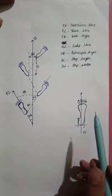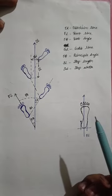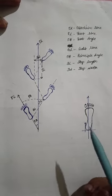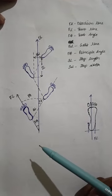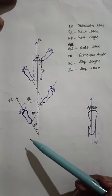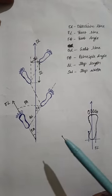So here I'm going to explain the diagrammatic representation of gait pattern analysis. Here are some parameters to explain the gait pattern: direction line, foot line, foot angle, gait line, principle angle, step length, and step width.